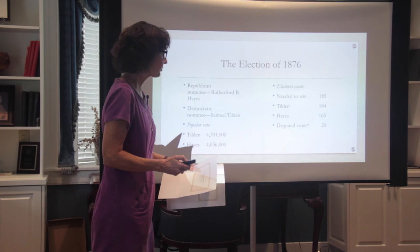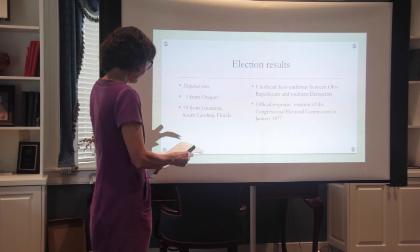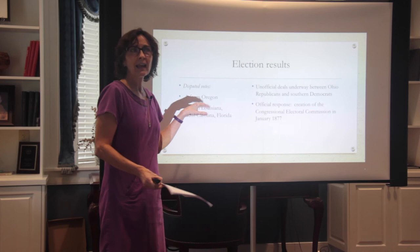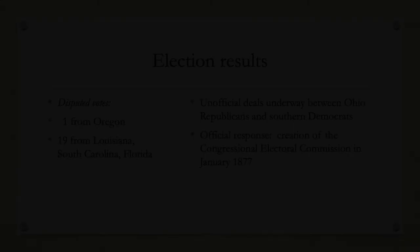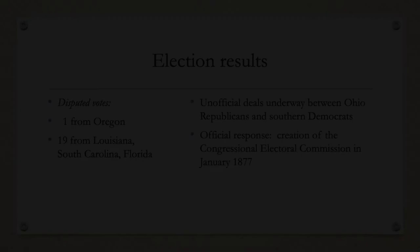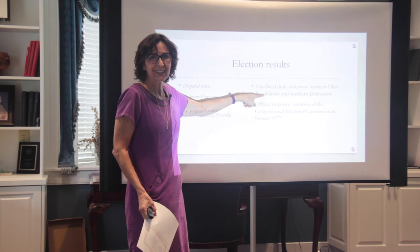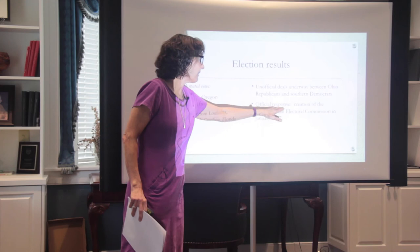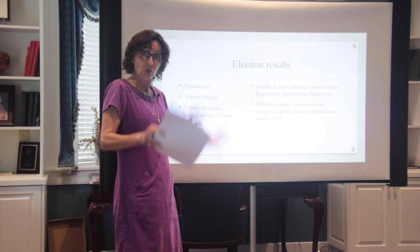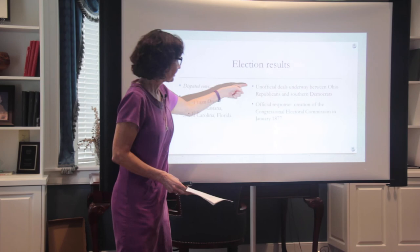Of the 20 disputed votes, one from Oregon was a technicality clearly going to Hayes. The remaining 19 come from southern states yet to be redeemed — states still with federal troops overseeing elections with disputed results. Unofficial deals are going on behind the scenes, but there also had to be an official response. Both unofficial and official processes would be important in ultimately resolving this deadlock.